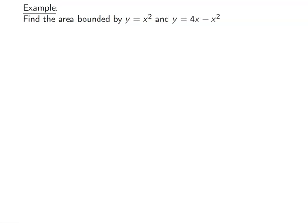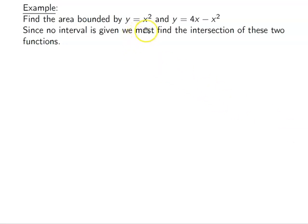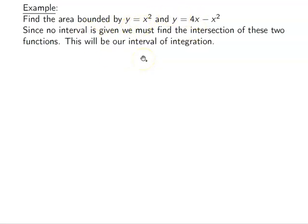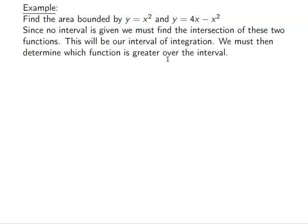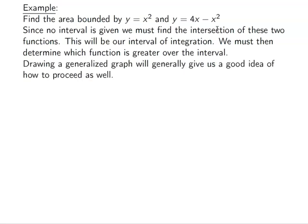Let's find the area bounded by y = x² and y = 4x − x². No interval is given, so we'll find the intersection of these two functions and look at the area bounded between them. The two points of intersection will be our interval for integration. We also need to figure out which function is larger over that interval.